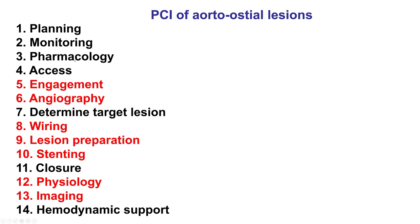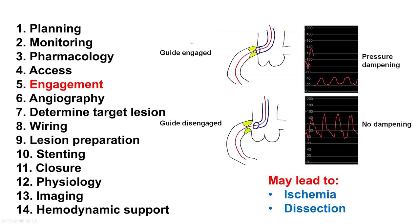Femoral and radial access are both acceptable. However, engagement is one area that can be fairly challenging in aorto-osteal lesions, the reason being that when there is engagement, the pressure can become dampened. The problem with this is it can cause ischemia, especially if the vessel is the left main, but also in large right coronary arteries. And if contrast is injected, there is a possibility of causing a dissection on the ostium that may complicate the procedure.